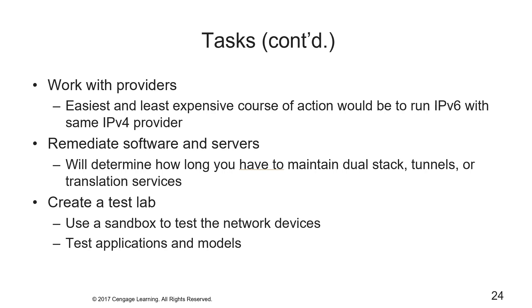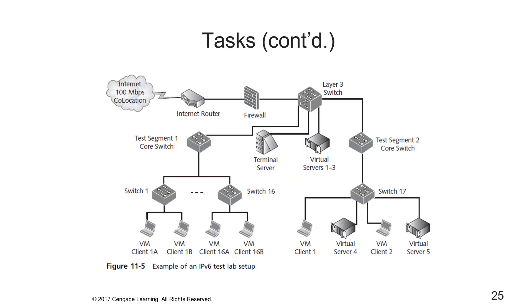A test lab is critical for v6 for several reasons. You need a sandbox — an IT environment isolated from the production environment — to test network devices for functionality and interoperability, and to identify any bugs. Application developers and other administrators will need to test their applications, remediate hosts, and upgrade them to be IPv6 native. When you build the lab, consider that you'll likely want to use it to test different techniques across multiple phases of the migration.